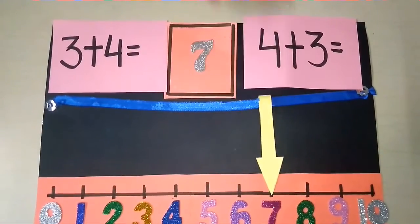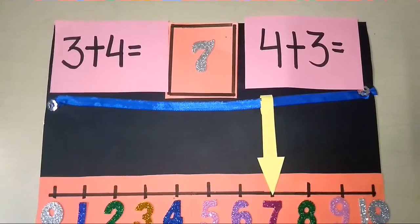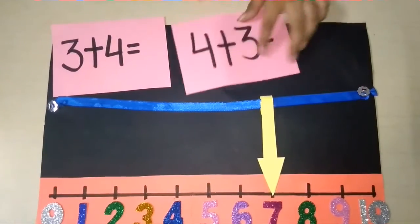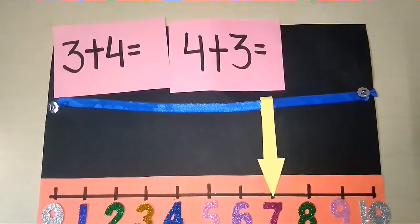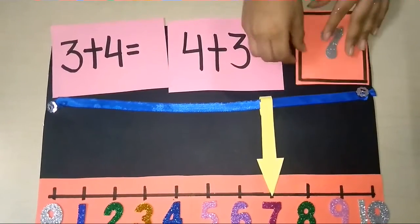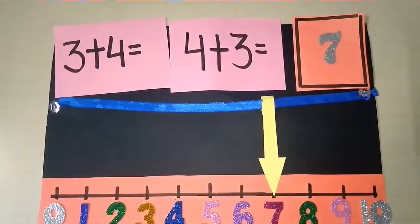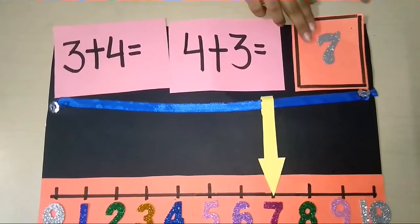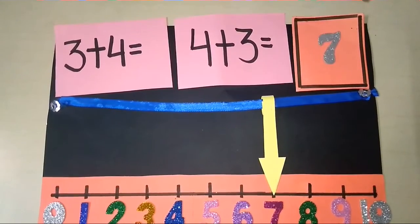So we can conclude that 3 plus 4 is equal to 4 plus 3 is equal to 7. That explains commutative property of addition.